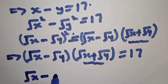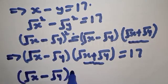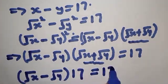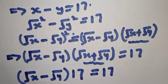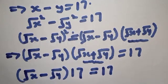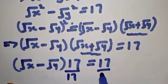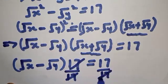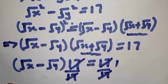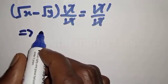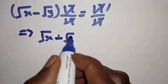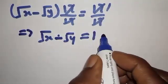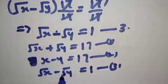So equation 2 becomes: (square root of x minus square root of y) times 17 equals 17. Dividing both sides by 17, this simplifies to square root of x minus square root of y equals 1. Let's call this equation 3.